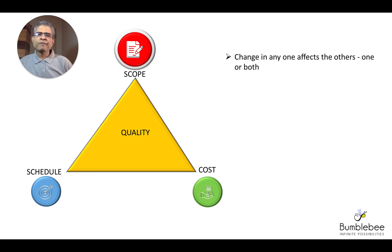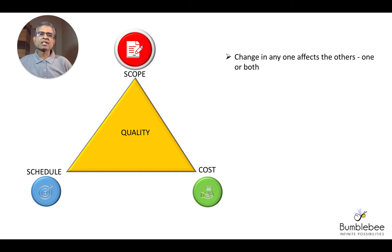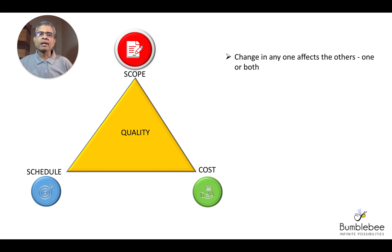For example, if the customer brings in new scope or new functionality to the project, then both the schedule and the cost are likely to be impacted. It is not possible to deliver the same scope without any change to the schedule and cost without affecting the quality. The team might decide to deliver at the same cost and same schedule, but then it would be a rushed job and it will impact the quality of the output. So keep in mind that quality is also a constraining factor — the fourth dimension.